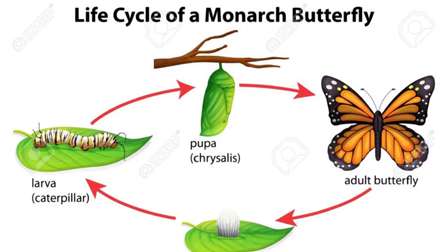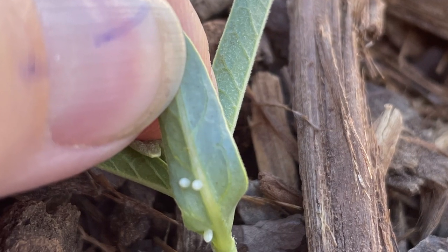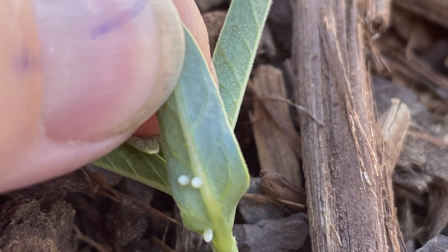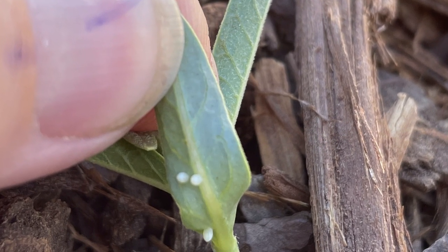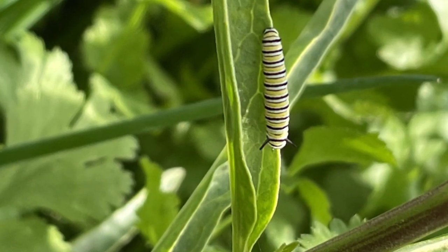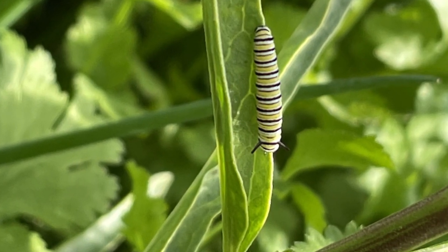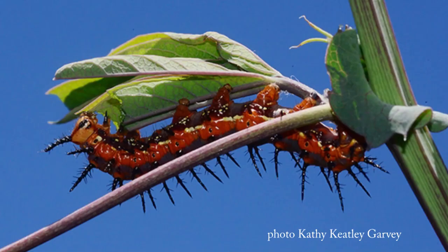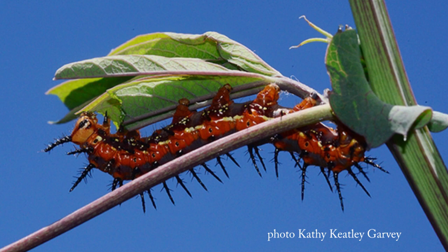In order to attract butterflies to your yard, it's important to know a little bit about the life cycle of a butterfly. A butterfly will lay eggs on what's called a host plant, and that host plant will then help the caterpillar survive. So the caterpillar will emerge out of the egg and then it will eat the host plant in order to grow larger.